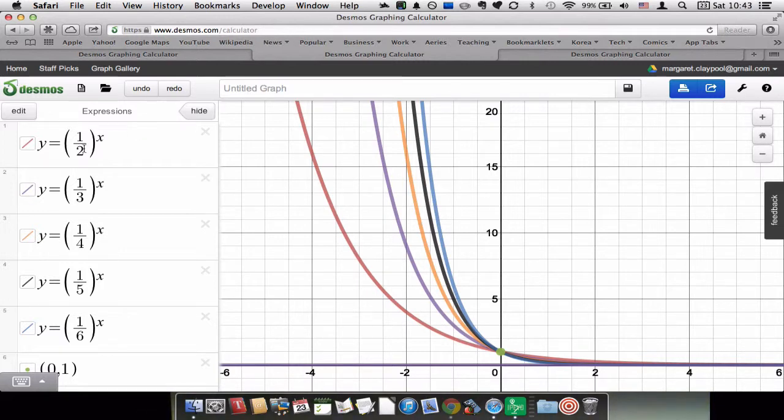So what happens if you make a fraction your base? Here are some examples: y = (1/2)^x, y = (1/3)^x, y = (1/4)^x, y = (1/5)^x, and so on. Well, here we see that instead of exponential growth, we have exponential decay.